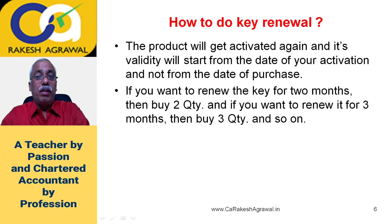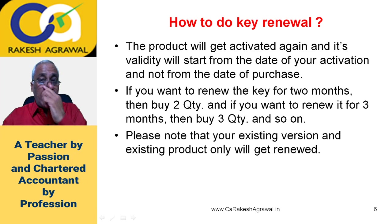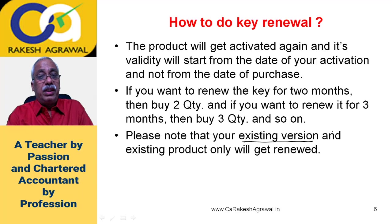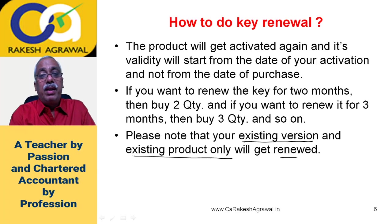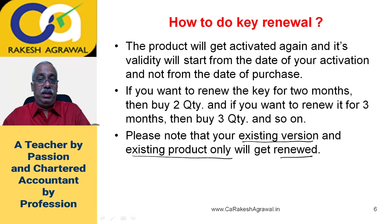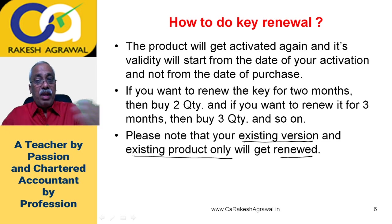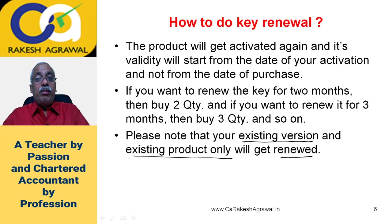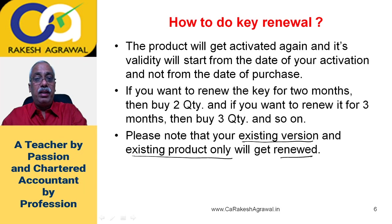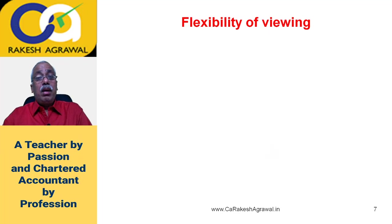Please note that your existing version — whichever version you had already purchased — is what gets renewed. For example, CA Final students had earlier version one, then version two, then version three. If you are a student of version two, the same version two will get renewed. This is logical because you can use the same notes and notebook after the key is renewed. The same product and same version of your regular batch will get renewed.